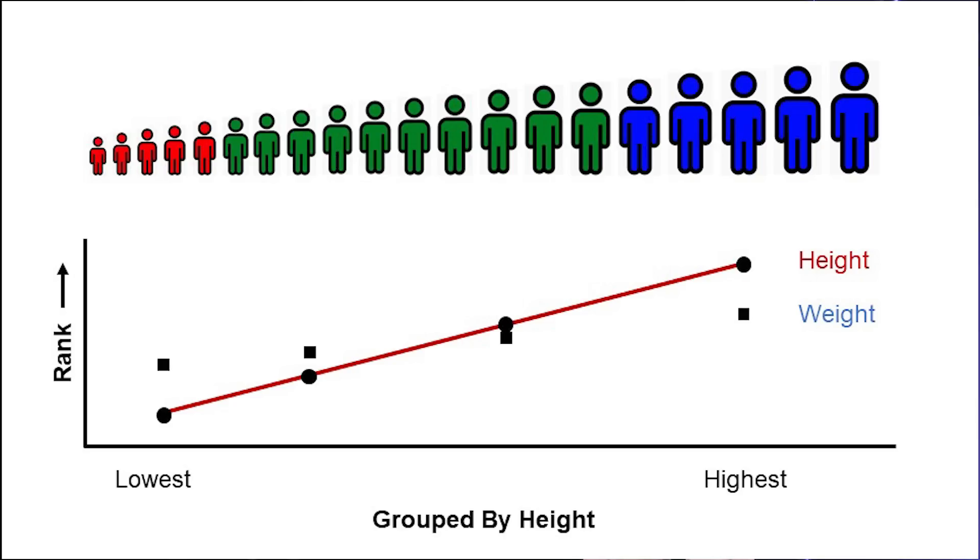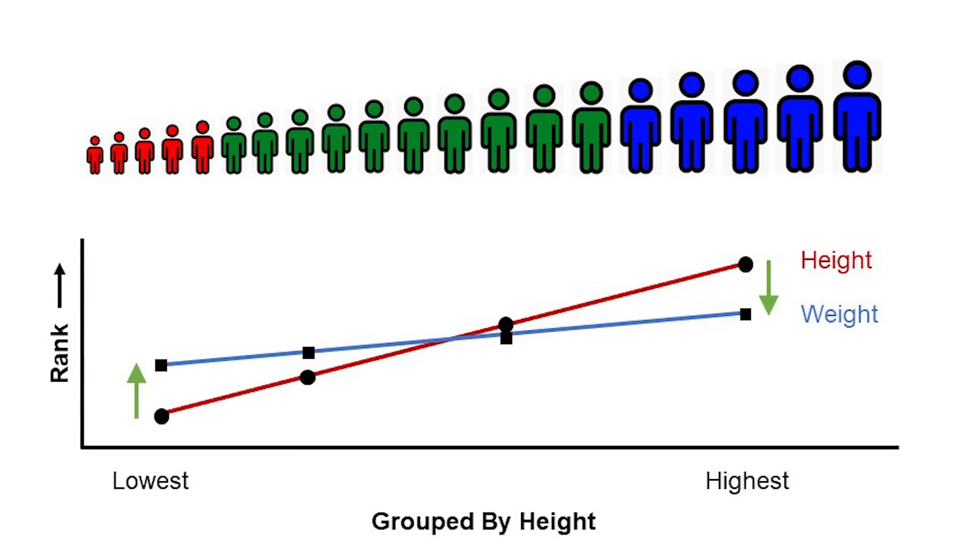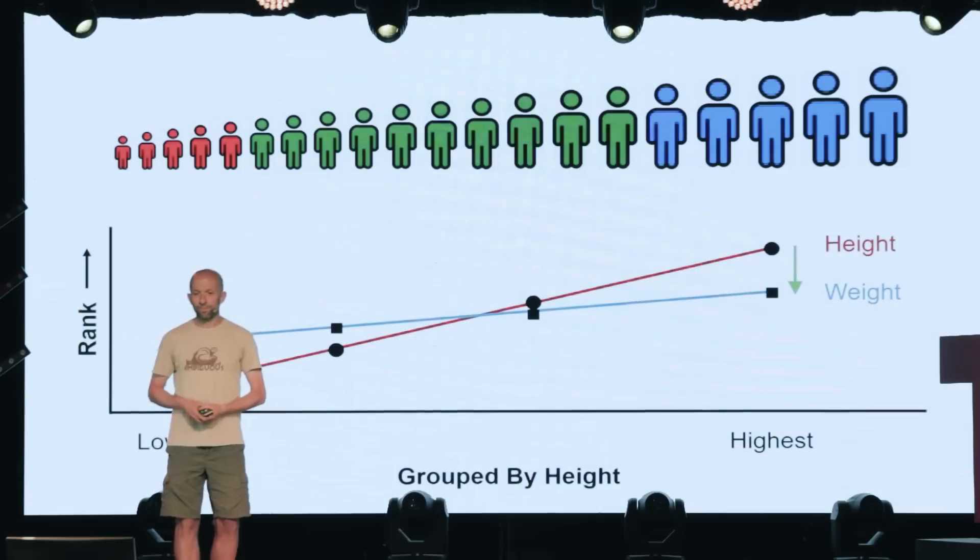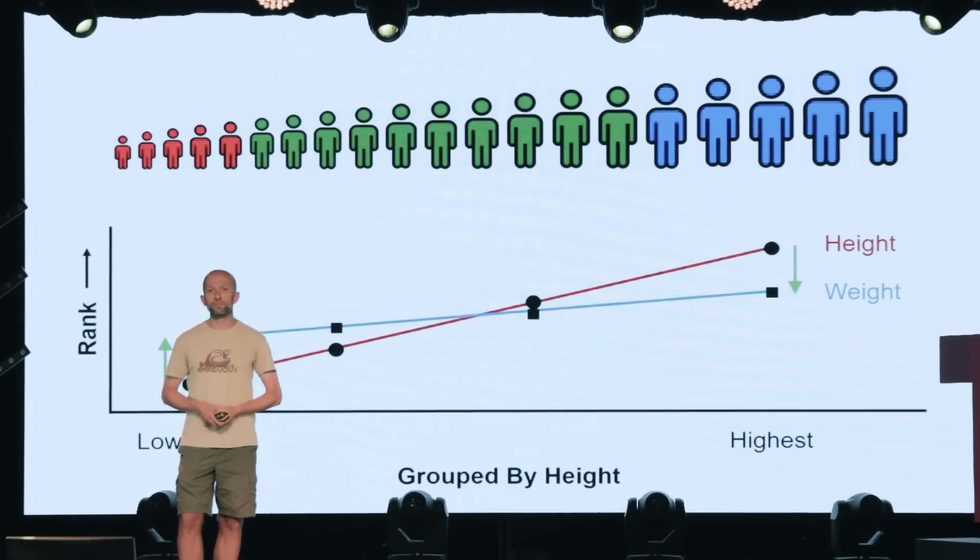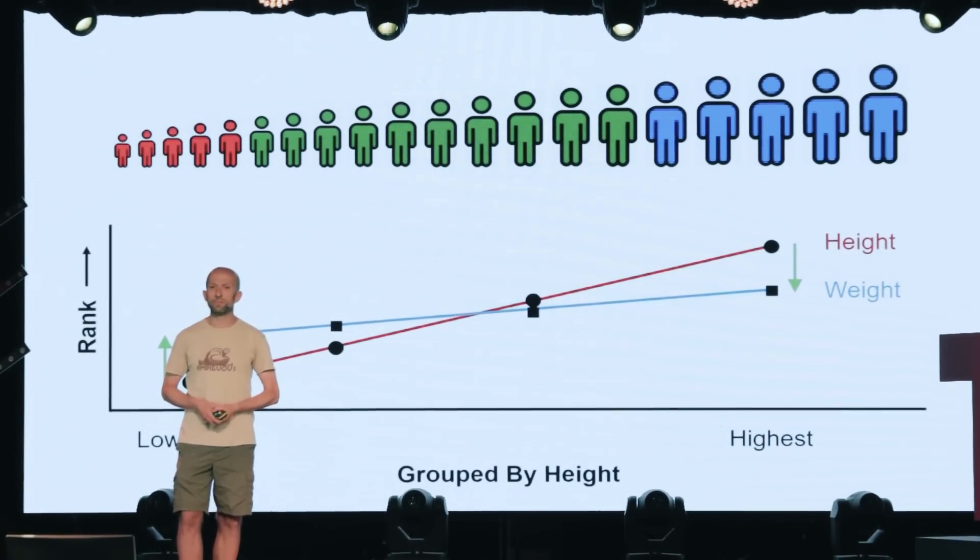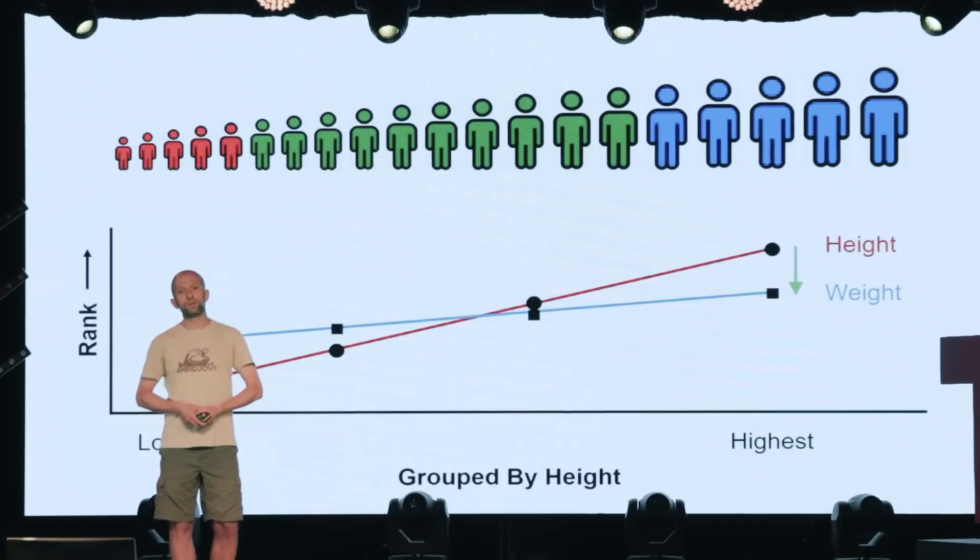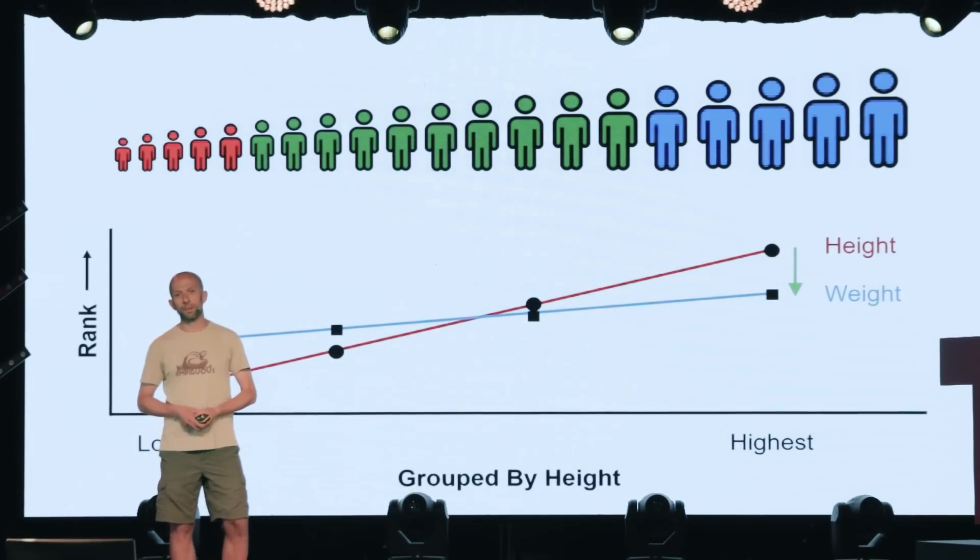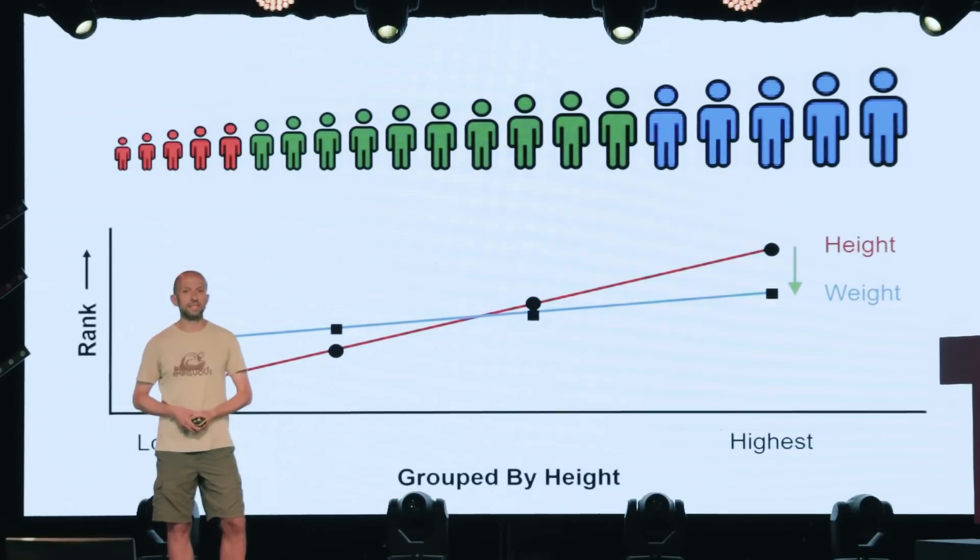Now, as a result, on average, the shortest people will rank higher for weight than they do for height, and the tallest people will rank lower for weight than they do for height, producing this blue line here and the crossover pattern you're now becoming familiar with. Now, some people might put forward a spurious explanation for why short people are relatively overweight or tall people relatively underweight, when in fact no explanation is needed.